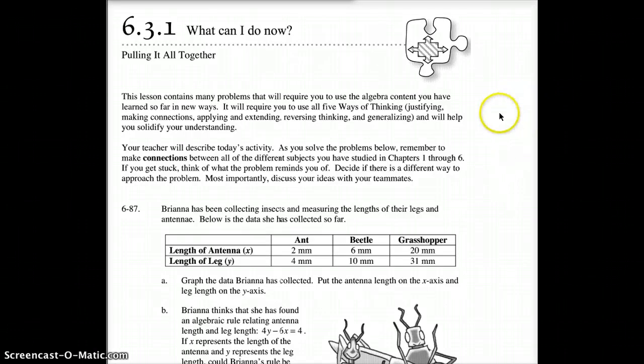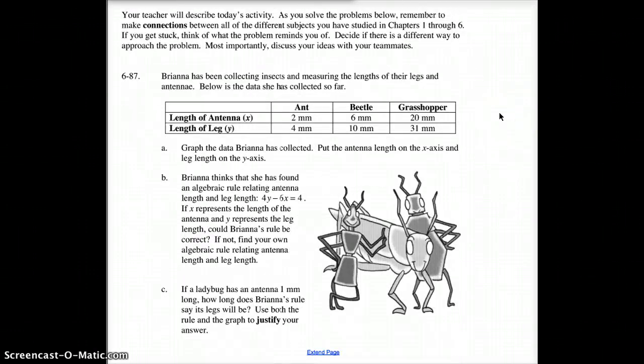So, at home today, what you're going to be doing is answering question 87 A, B, C. You're going to take a look at what's going on here and answer A, B, and C.